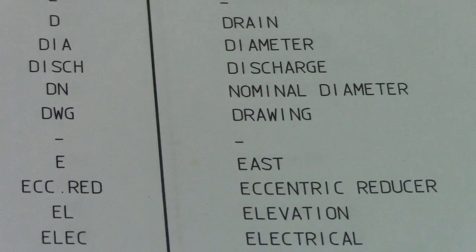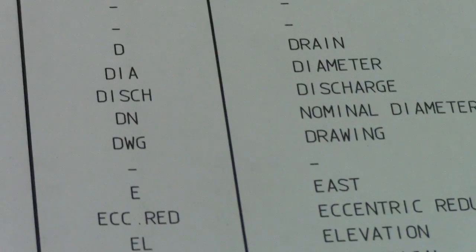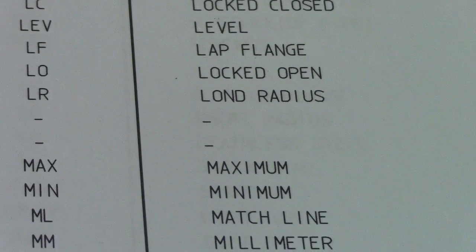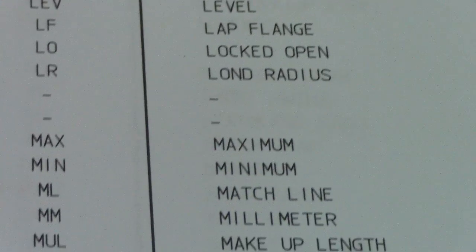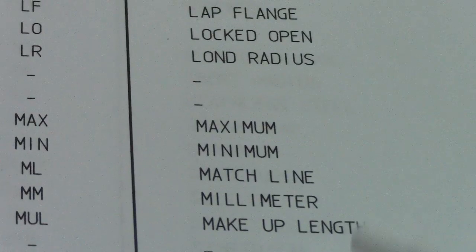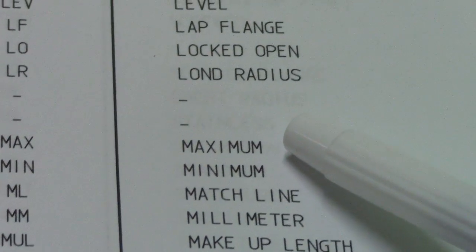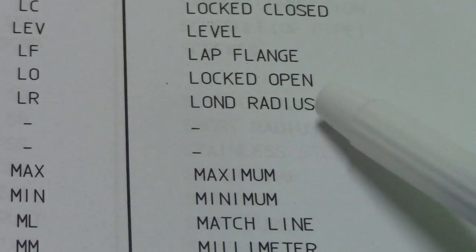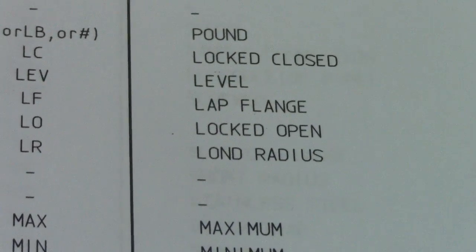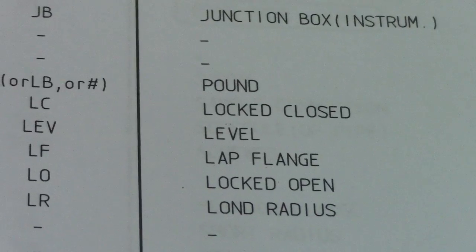So this is piping abbreviation. Next: MU is make-up length, MM is millimeter, ML is mid-line, MIN is minimum. LR is long radius, LO is lock often, LF is lapflange — you will also see these in isometric drawings.